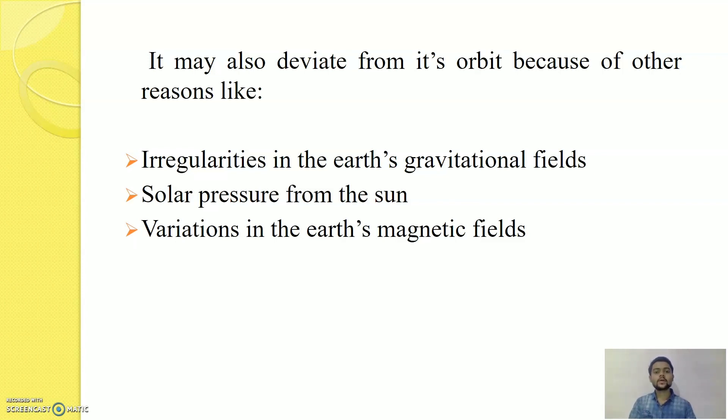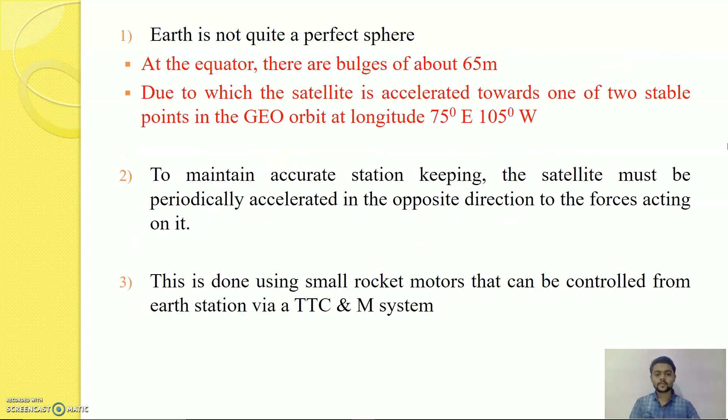Irregularities in Earth Gravitational Fields. We know that Earth is not a perfect sphere, it has bulges of around 65 meter at the equator. And because of which satellite is accelerated toward one of the two stable points in the geo-orbit at longitude 75 degree east and 105 degree west. To maintain accurate station keeping, the satellite must be periodically accelerated in opposite direction to the forces acting on it. This is done using small rocket motors that can be controlled from Earth Station with the help of TTC and M system. TTC and M stands for Telemetry Tracking Command and Monitoring System.